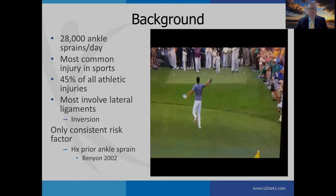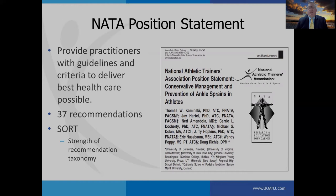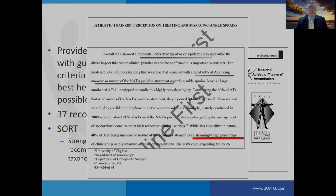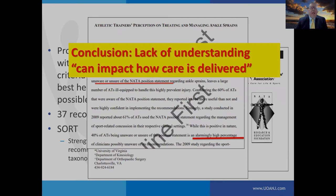The NATA released a position statement published in the Journal of Athletic Training in 2013, providing practitioners with guidelines to deliver the best healthcare possible for managing ankle sprains. It contains 37 different recommendations with strength of recommendation taxonomy, where each recommendation is given a grade of A, B, or C based on the strength of the associated literature. A recent article by Corbett surveyed athletic trainers and found only a moderate understanding of ankle epidemiology, with almost 40% unaware or unsure of the NATA position statement — an alarmingly high percentage, as a lack of understanding can impact how care is delivered.